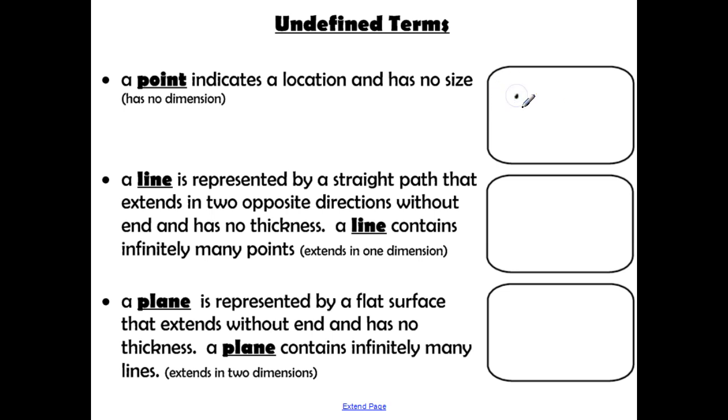So we just want to use a dot to indicate a certain location. It's important we talk about it not having a size because it doesn't matter how big your point is, it doesn't cover any more space than a smaller point. All it does is tell us a very specific location.